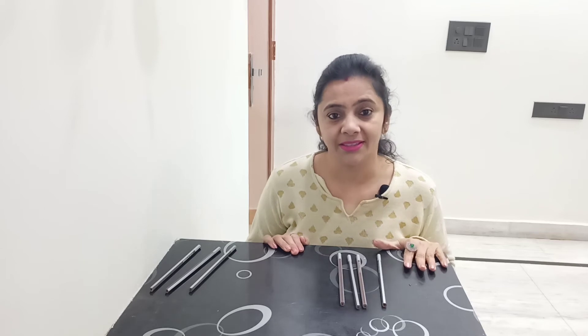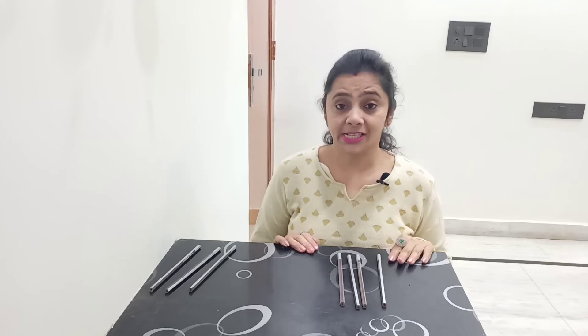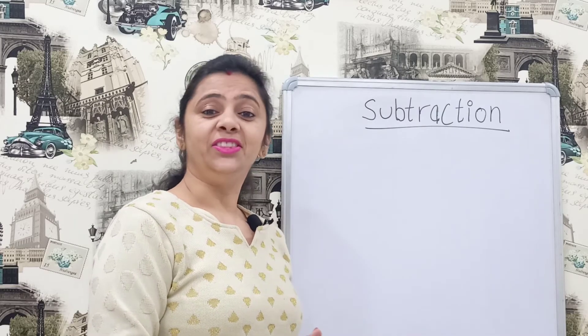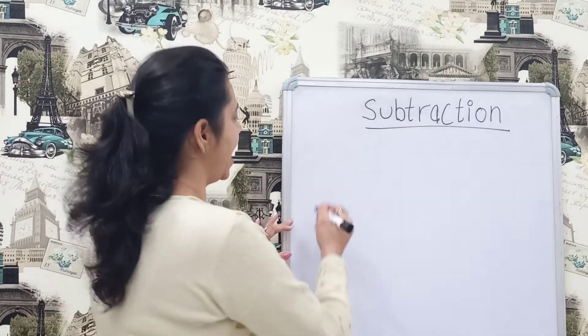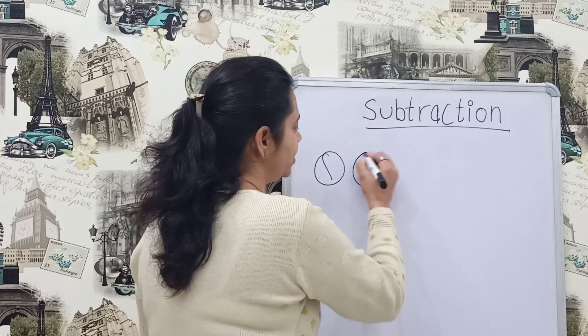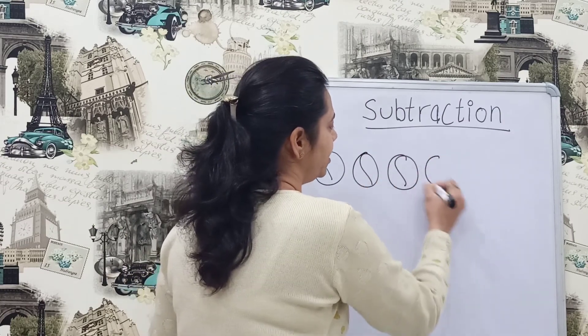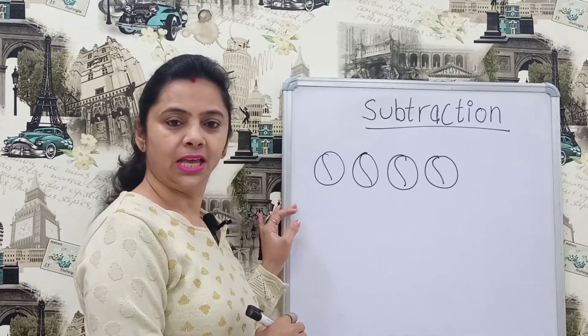I have four pencils left with me. This is called subtraction. You have to practice a lot, children. I hope you all are able to understand the concept of subtraction — what it is and how we can do it. Now let's learn through more examples. Suppose I have four balls.